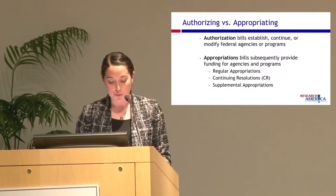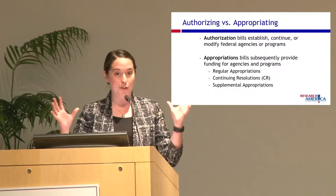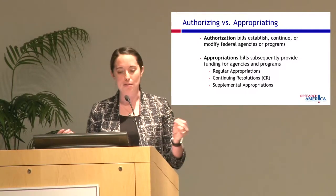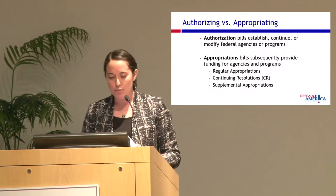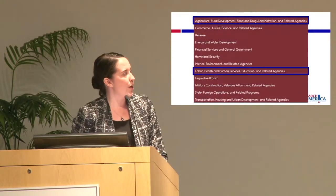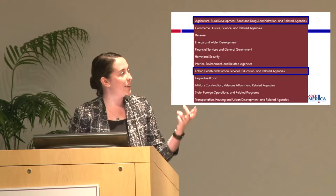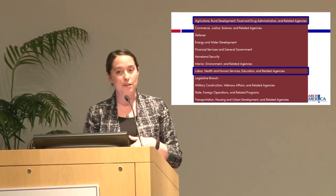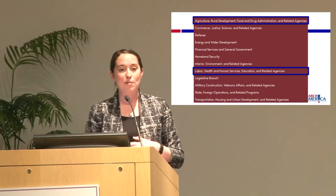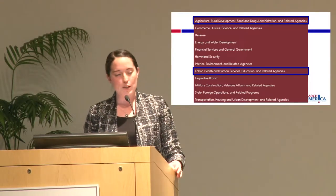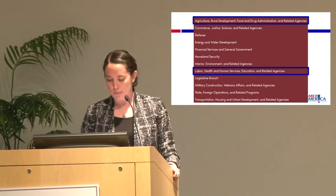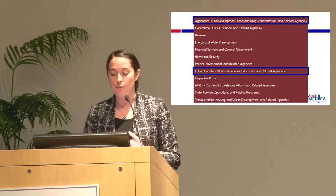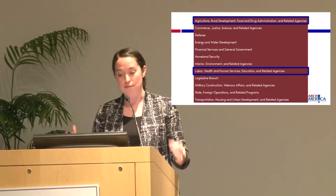The discretionary priorities are divided into about 12 categories known as subcommittees. The two main ones we care about here are Labor-H, which covers Labor, Health and Human Services, and the Department of Education — that's where NIH funding is — and Agriculture, Rural Development, and Food and Drug Administration, which is where FDA funding is.